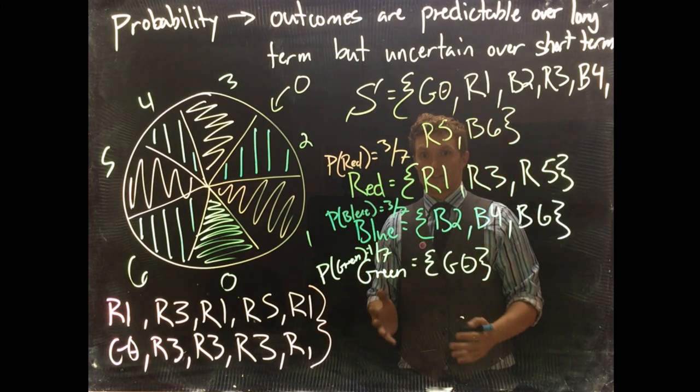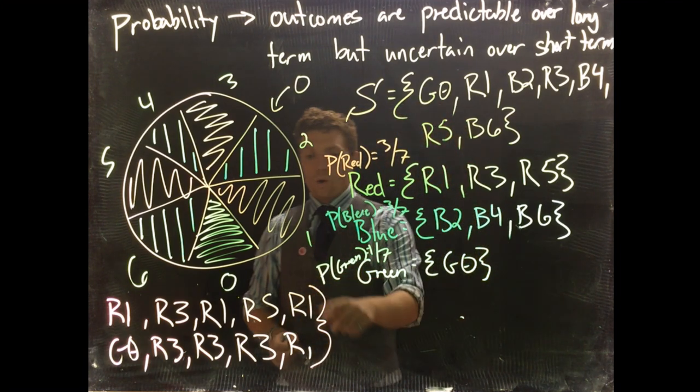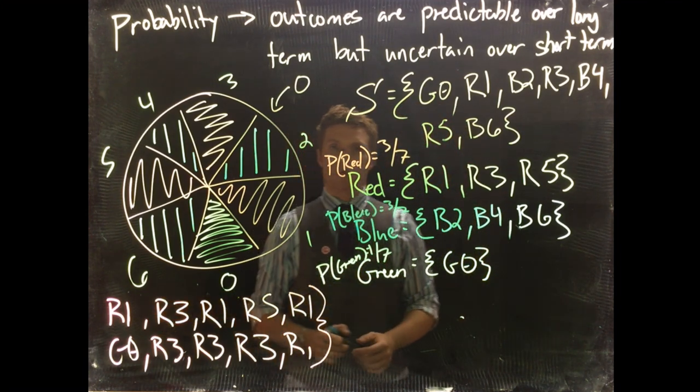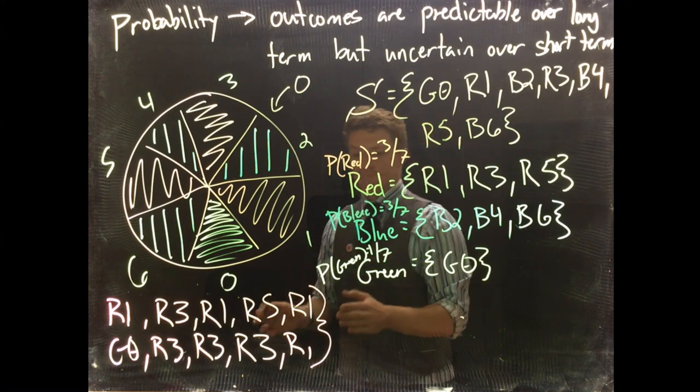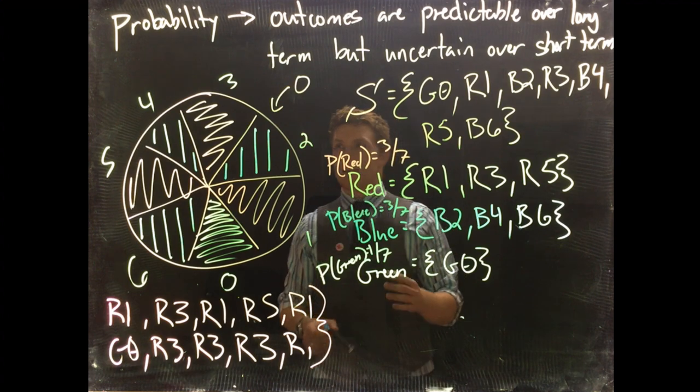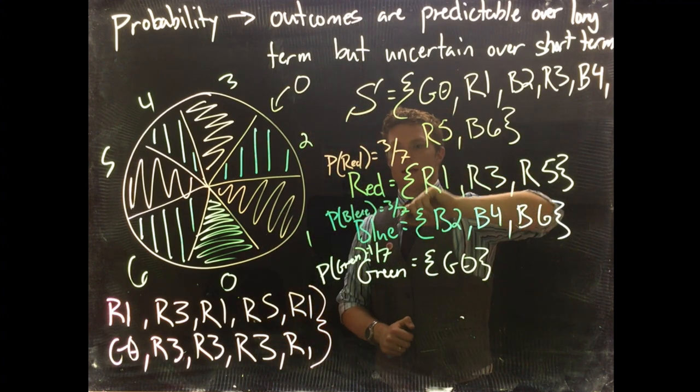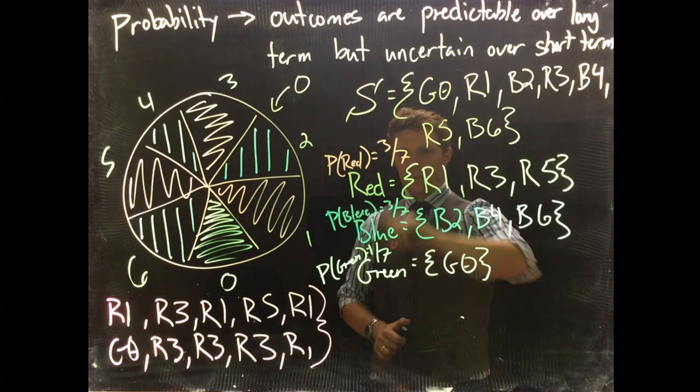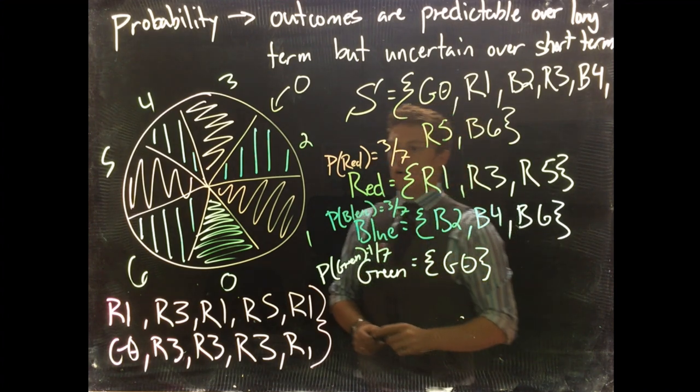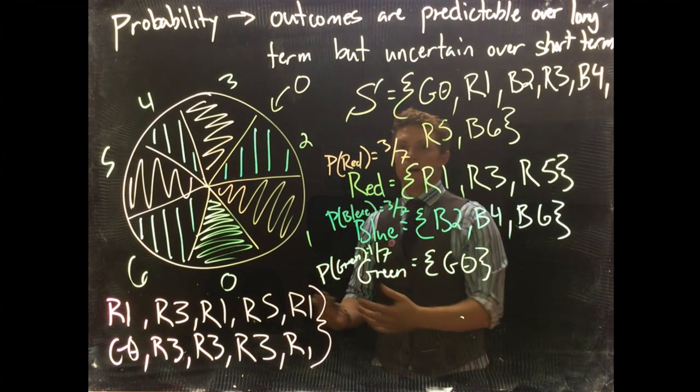And this is false. This is absolutely incorrect. What happened in the past on this table has no effect on what is going to happen on the next roll. It's still going to be a three-sevenths chance for red, three-sevenths chance for blue, one-seventh chance for green. The probability for that next roll is not affected by the others.